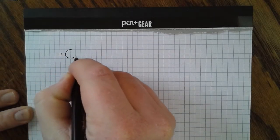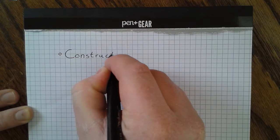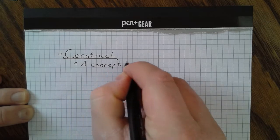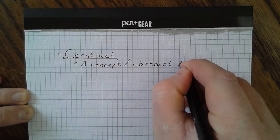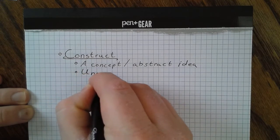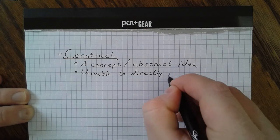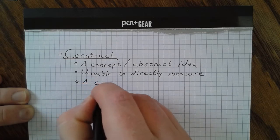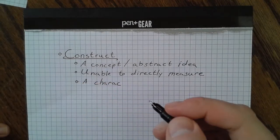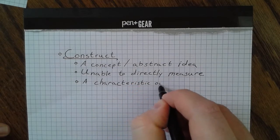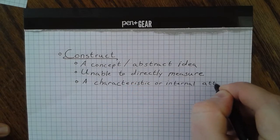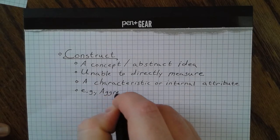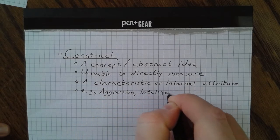In this video we'll be going over constructs and operational definitions. A construct, very simply put, is just a concept or some type of abstract idea. One critical attribute is that you can't directly measure it — it's abstract, you can't directly observe it. However, there are always some type of characteristic or attribute of a person — something you'd ideally like to measure in psychology. Examples include things like aggression, how aggressive a person is, or how intelligent or smart they are.